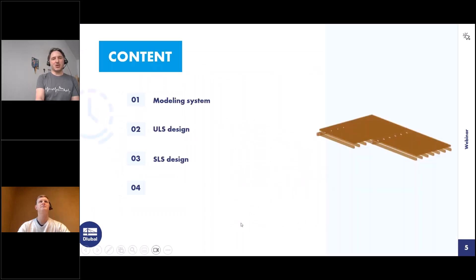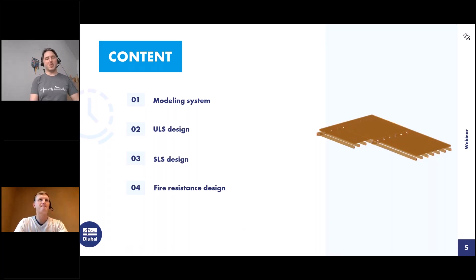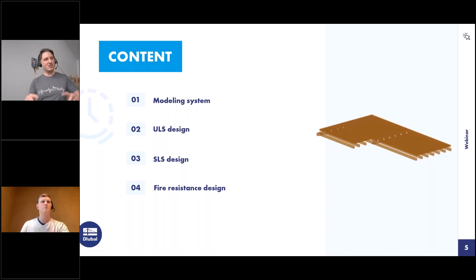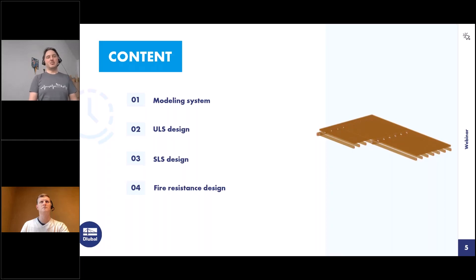The content we want to show you today includes modeling of a 2D system — specifically how to extract effects from a 3D building into a 2D model, including load transfer points, and then design it. We will cover design for ultimate limit state, serviceability limit state including vibration analysis, and fire resistance design also for CLT — that is the big new feature today. We will also bring everything into a printout report.